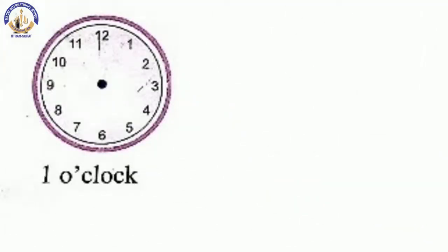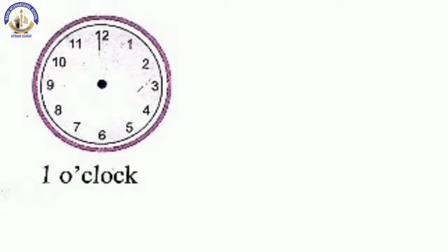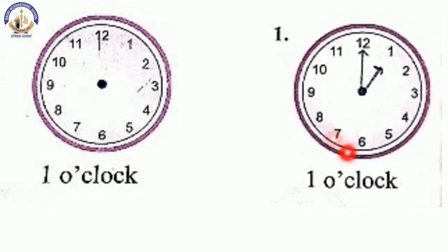So first one is one o'clock. Kaisa hai ga? The minute hand is on twelve and the hour end is on one. So draw the hand as like this in your textbook. See here. Minute hand is on twelve and the hour end is on one. So draw in your textbook, children.